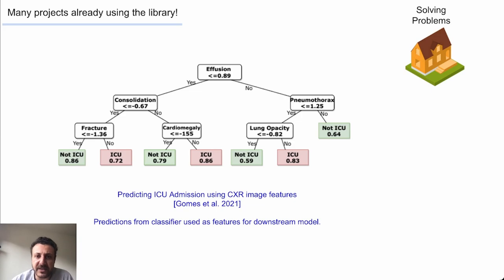In this project, the goal is to predict ICU admissions. A pre-trained classifier is used to predict image features, and those features are used in a decision tree.